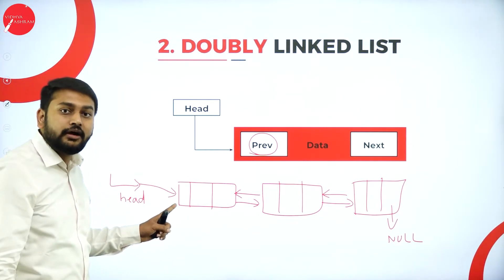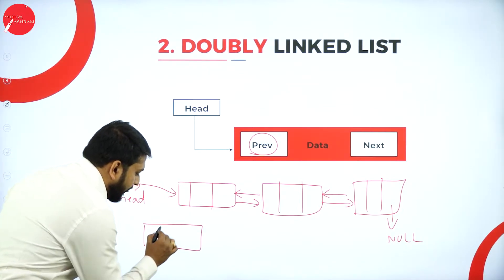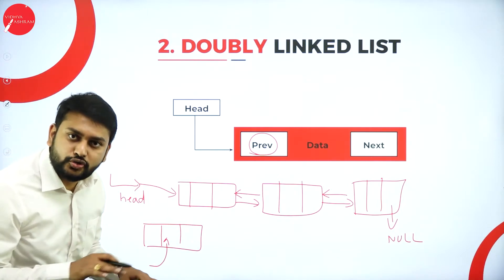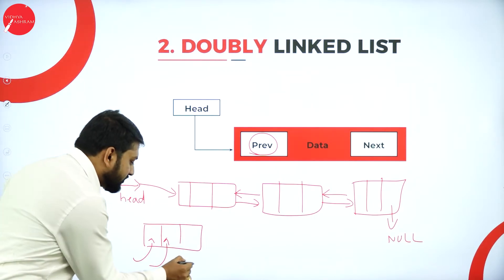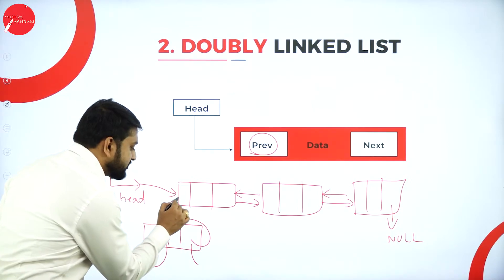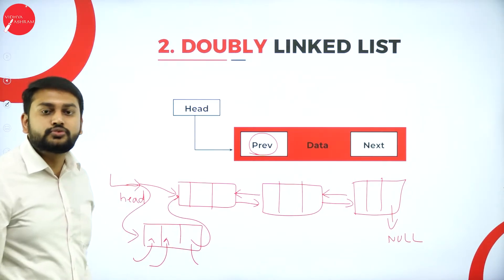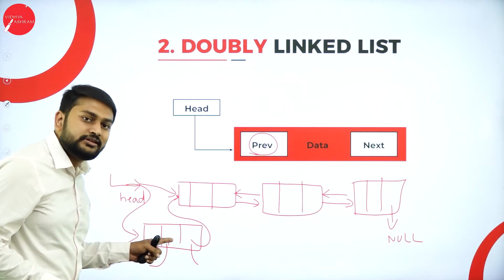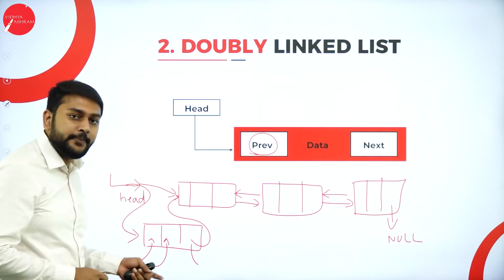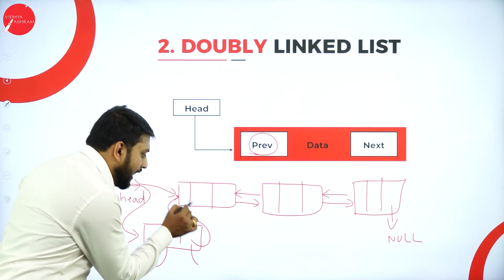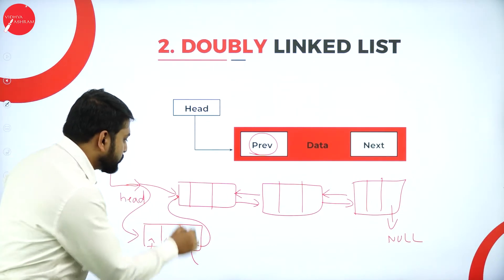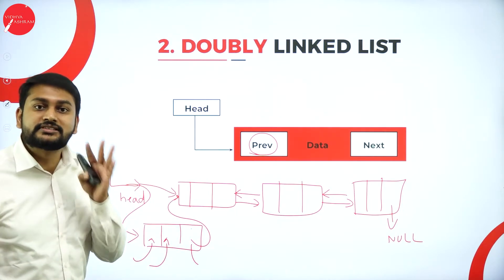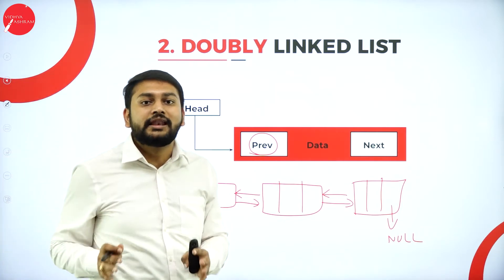To insert at the beginning: first create the node with three parts, then store the data, then store the previous address as null (minus one), then store the address of the current head node in the next part of the new node, then update the previous pointer of the old head node to point to this new node, and finally move head to point to the new node.